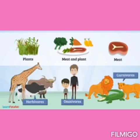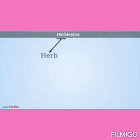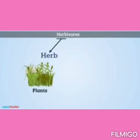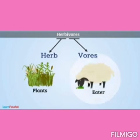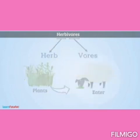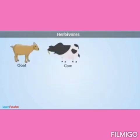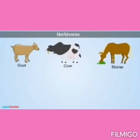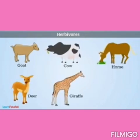Herbivores. 'Herb' means plants and 'vores' means eaters. The animals which obtain their food only from plants are called herbivores. Examples are goat, cow, horse, deer, giraffe, butterfly, etc.